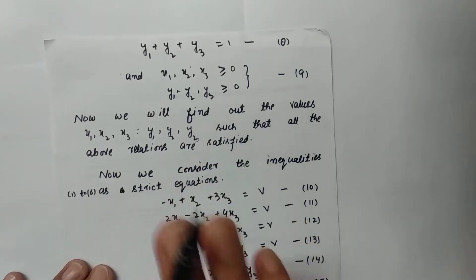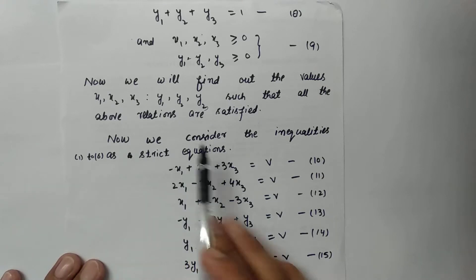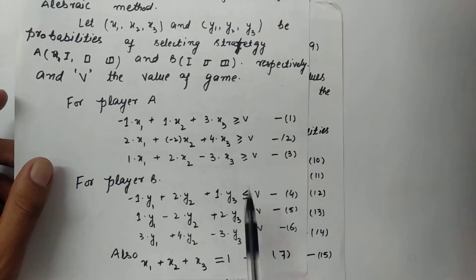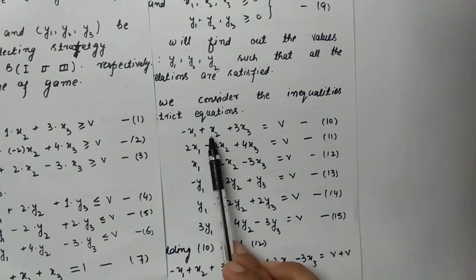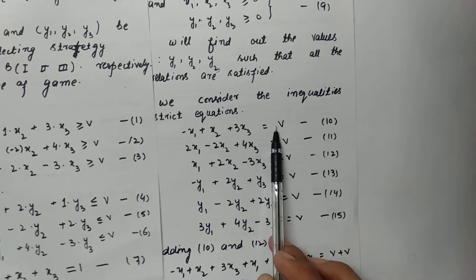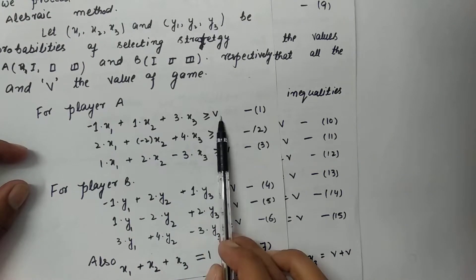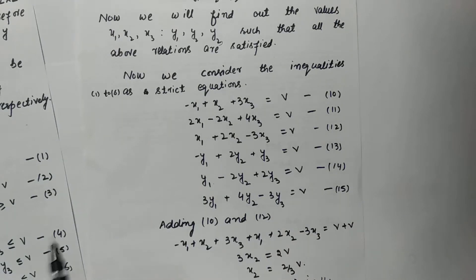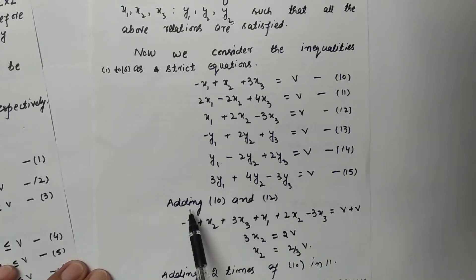Now we will find out the values x1, x2, x3, y1, y2, y3 such that all the above relations are satisfied. We consider the inequalities 1 to 6 as strict equations — we remove the inequality signs and write them as equations. So we write: minus x1 plus x2 plus 3x3 equals v, and so on for the remaining equations.